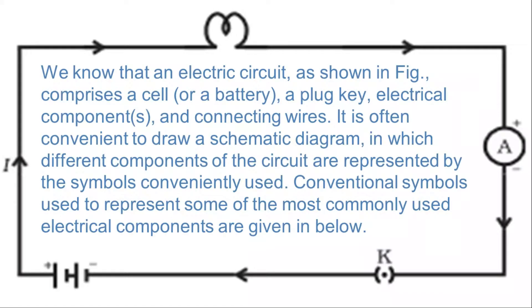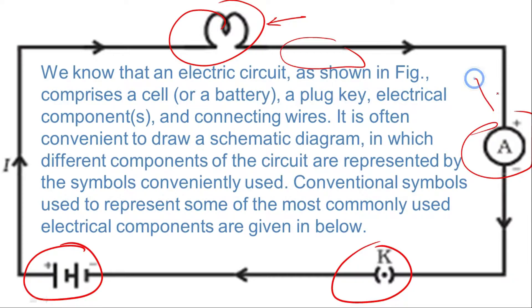We know that an electric circuit, as shown in figure here, comprises a cell or a battery, a plug key, and electric components like bulbs, ammeter, and connecting wire which we use to connect electrical components. It is often convenient to draw a schematic diagram in which different components of a circuit are represented by the symbols conveniently used. Conventional symbols used to represent some of the most commonly used electrical components are given below. Now we are going to study that.